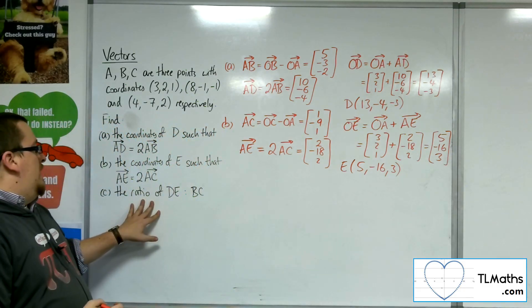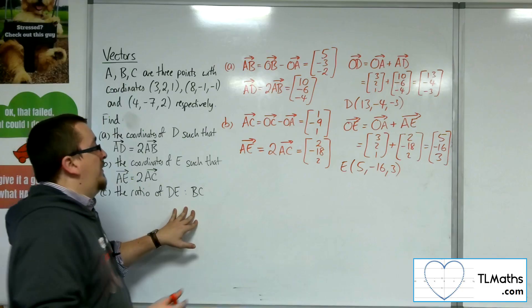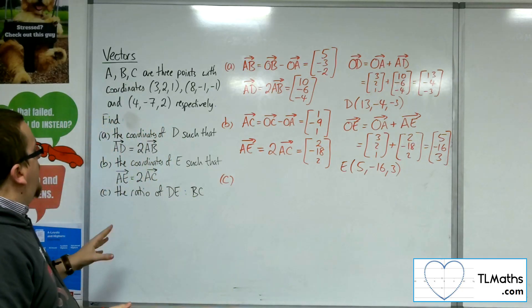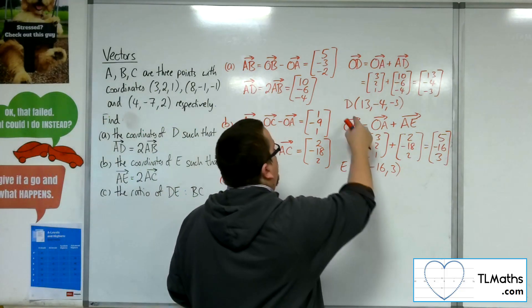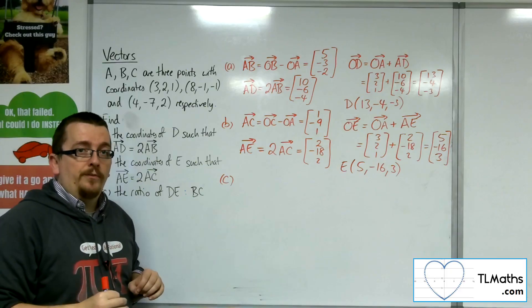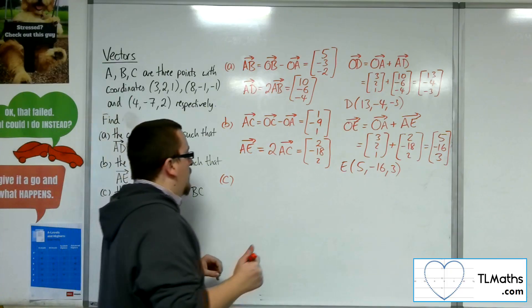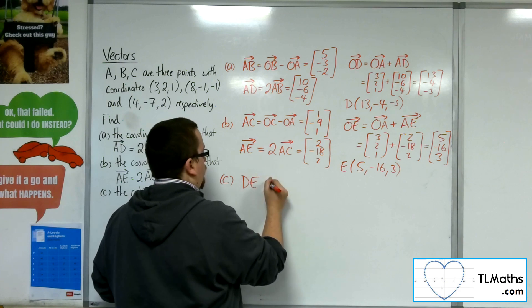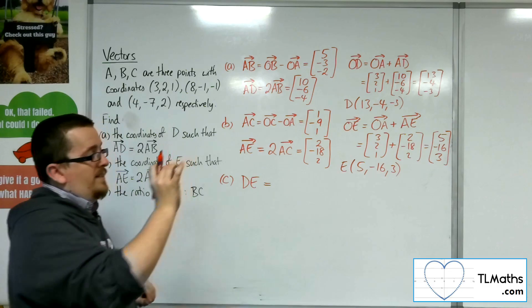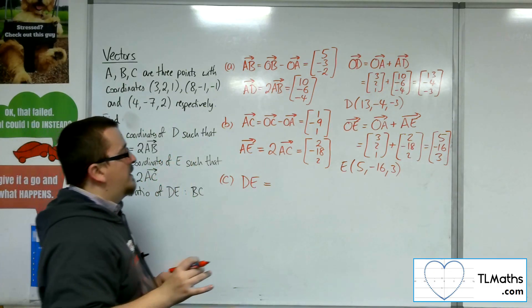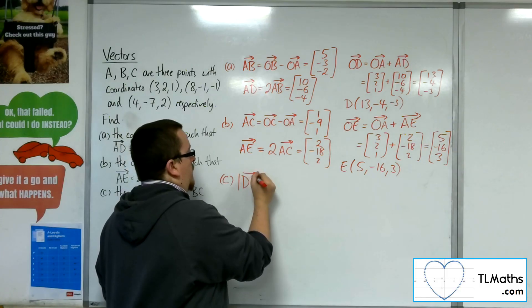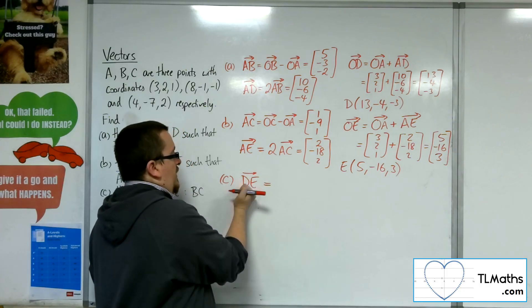Now C will ask for the ratio of DE to BC. Okay, so DE, I need to find the length or the distance between those two points. So I could find the vector DE and find its length. So find the vector DE first, then find its length.